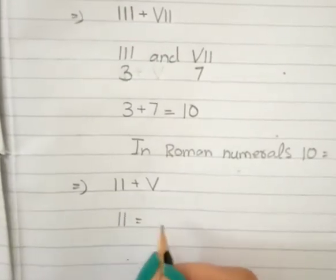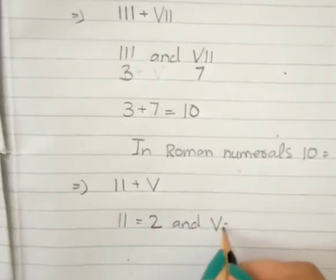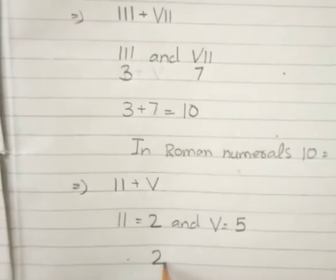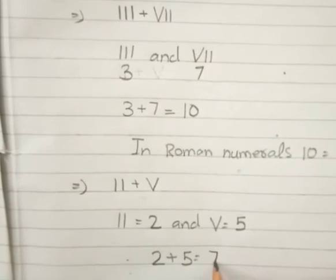II equals two and V equals five. We have to add two plus five, which equals seven.